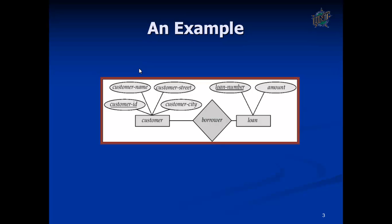In an ER diagram example, there are two entities: customer and loan, represented in rectangular boxes. Customer can have attributes like customer ID, customer name, customer street, customer city. Loan can have attributes like amount and loan number. The relationship between them is described with a diamond box — customer borrower loan.